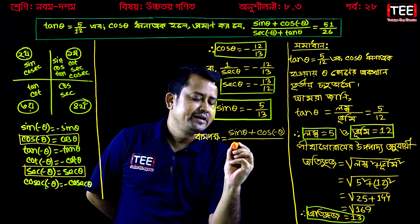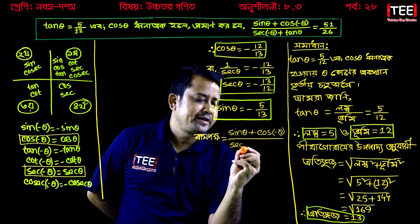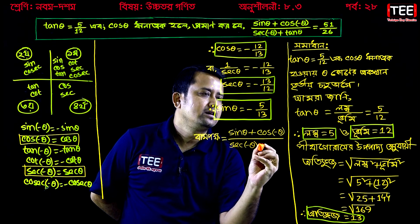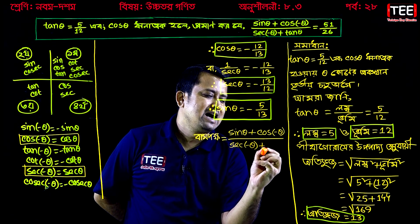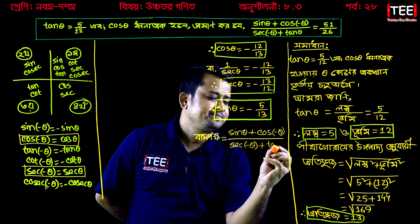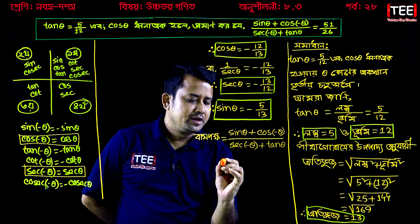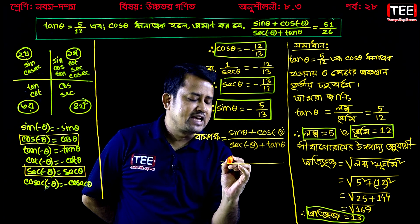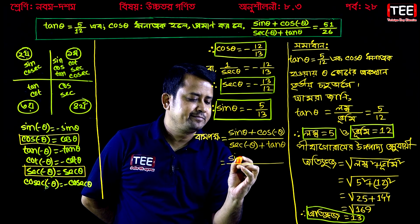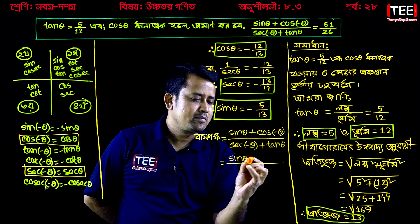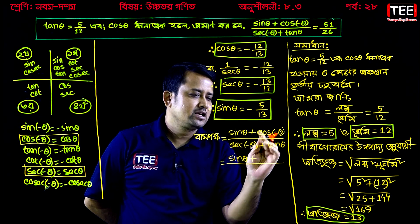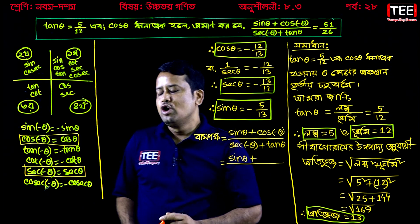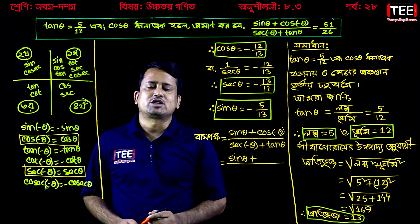Sec minus theta plus tan theta equal to cosine theta plus cos minus theta.